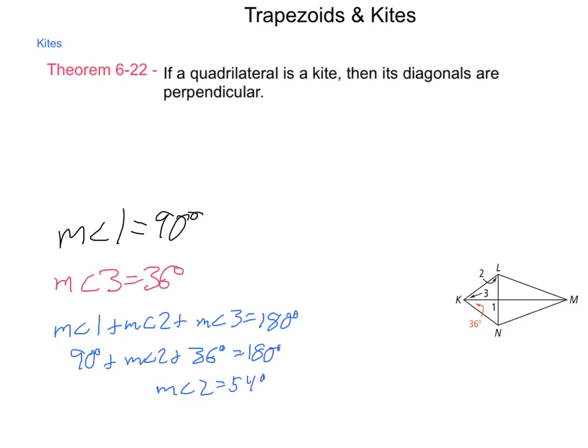Trapezoids and kites are another set of quadrilaterals that are going to be important. Make sure you have these theorems down and are ready to use them.